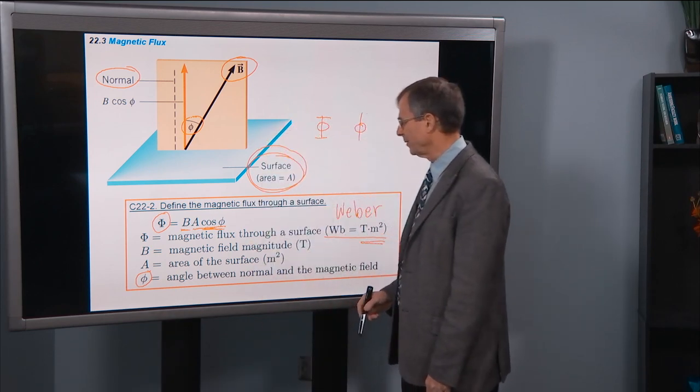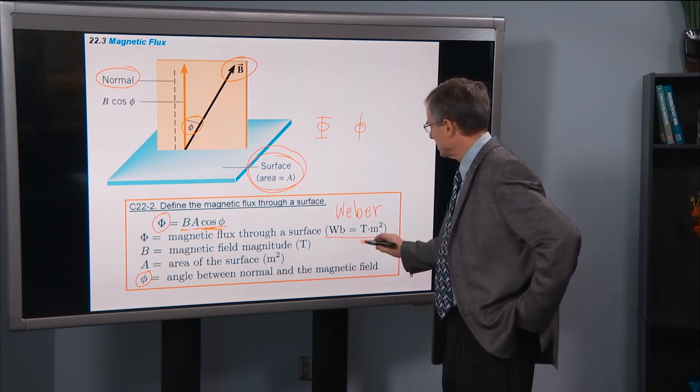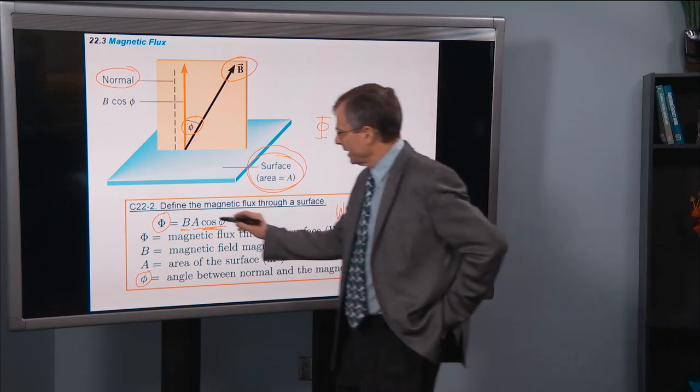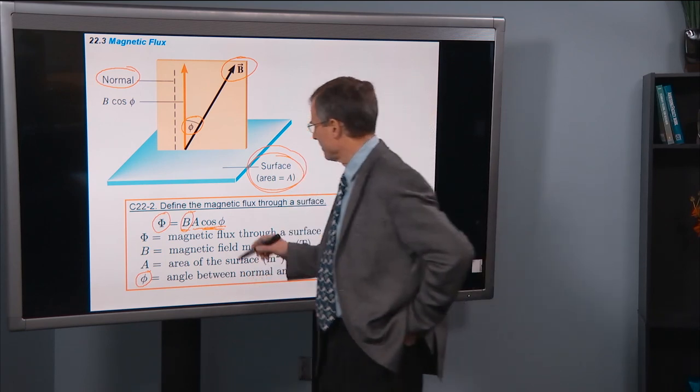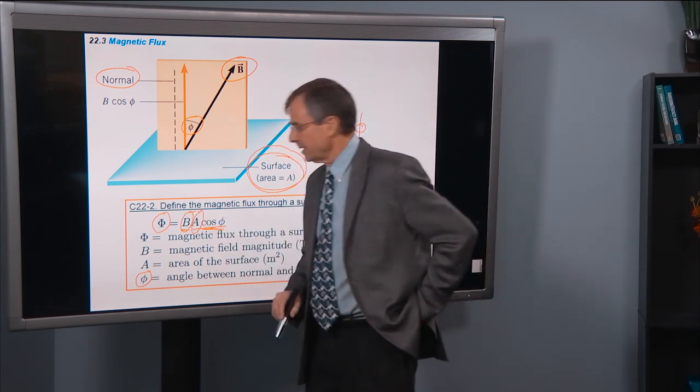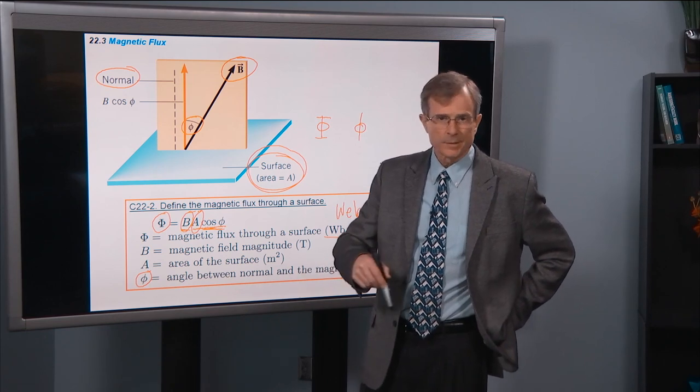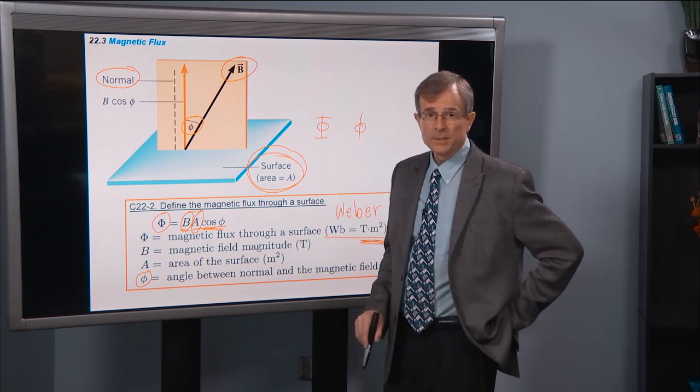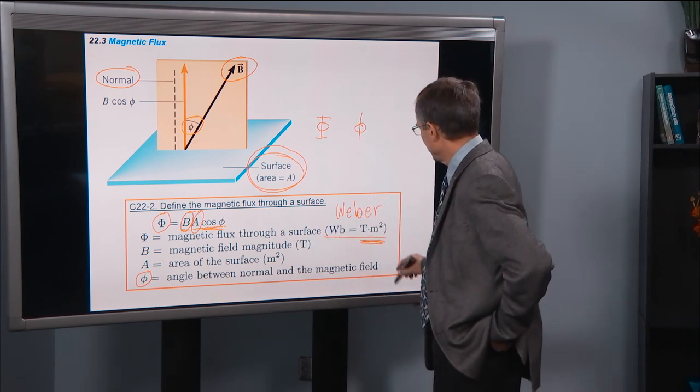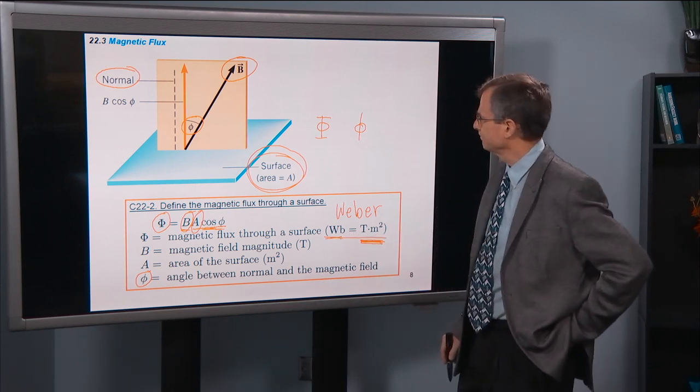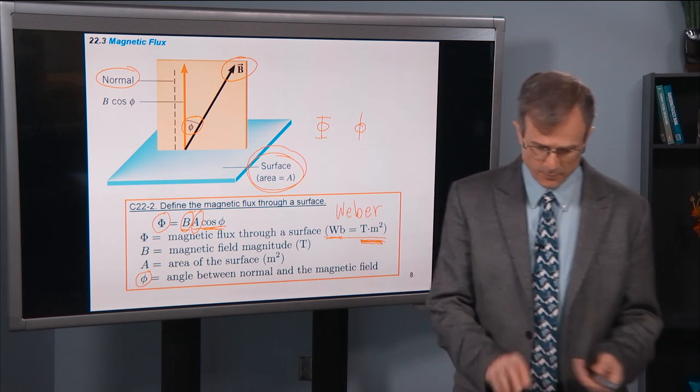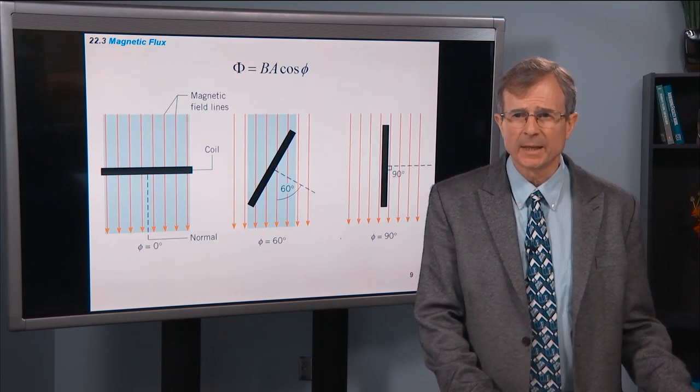That's the definition of magnetic flux. Do we believe these units? Well, you've got a magnetic field here that's in units of tesla. And you've got an area, and an area is length times the width. That's units of meters squared. So tesla times meters squared is the Weber. That's it for the definition of the magnetic flux.